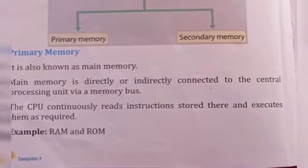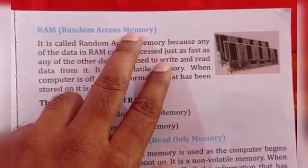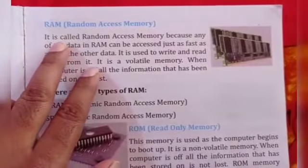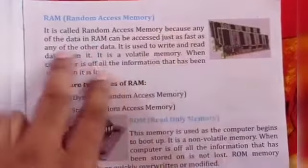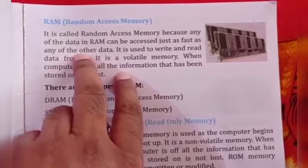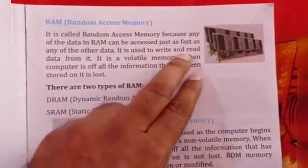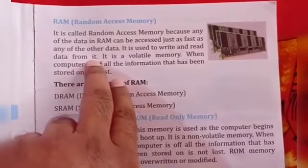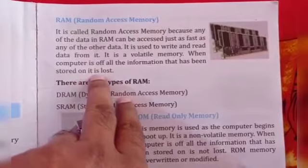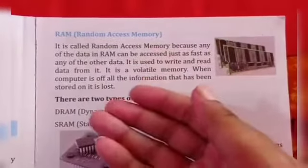RAM stands for Random Access Memory. It is called random access memory because any data in RAM can be accessed just as fast as any other data — यानि RAM की memory बहुत fastly work करती है और processing speed को बढ़ाती है। It is used to both read and write data. It is a volatile memory — when the computer is switched off, all data stored in it is lost.